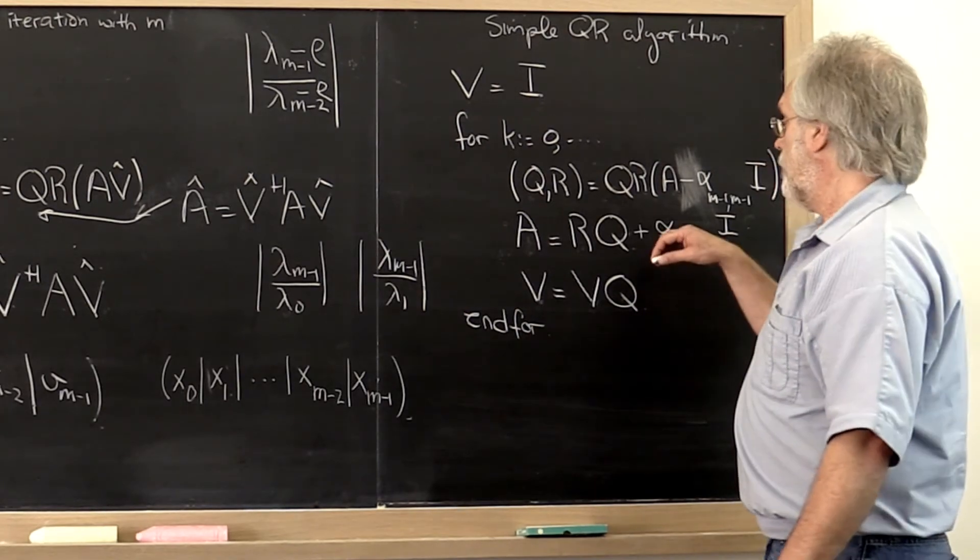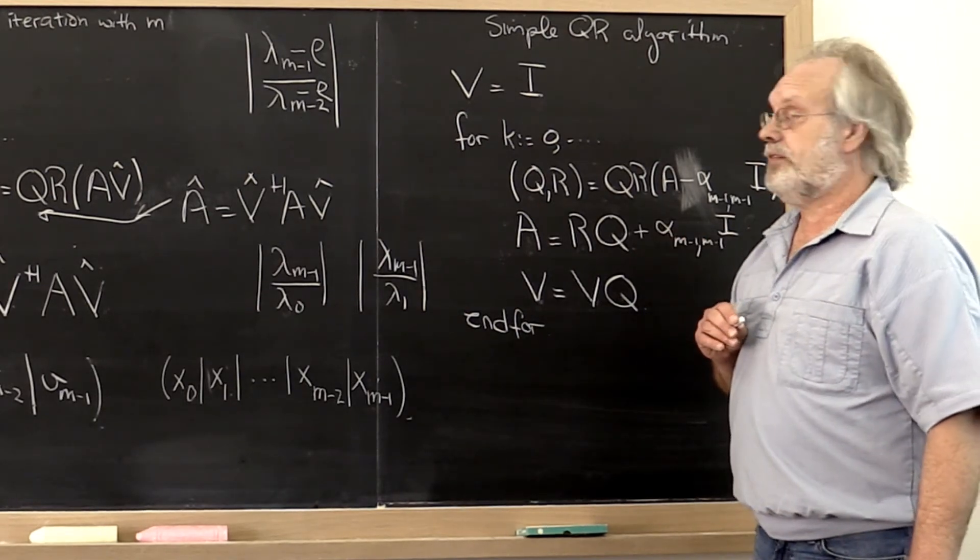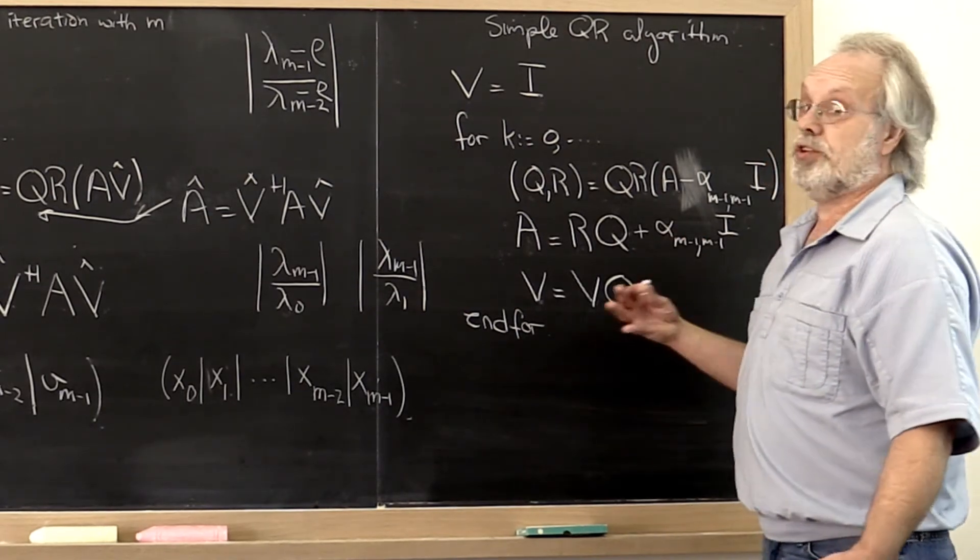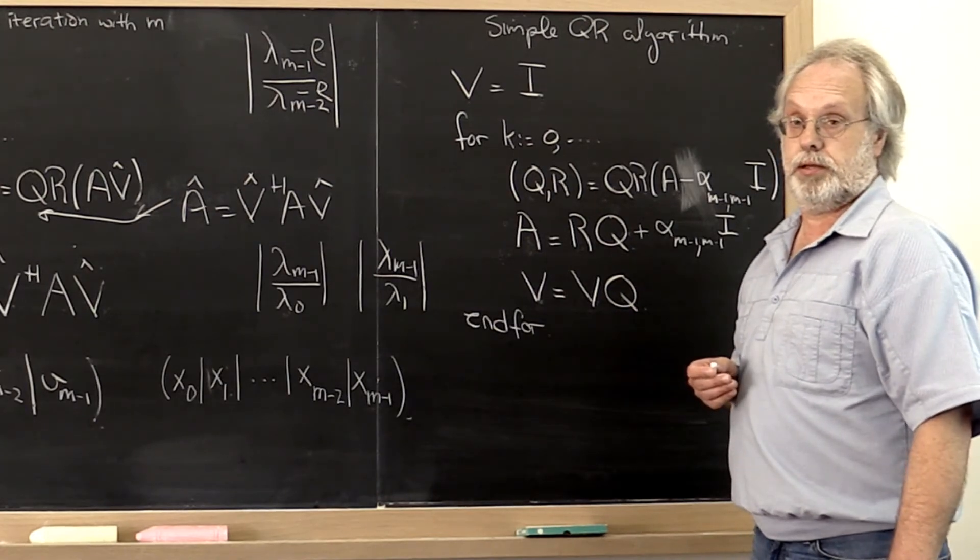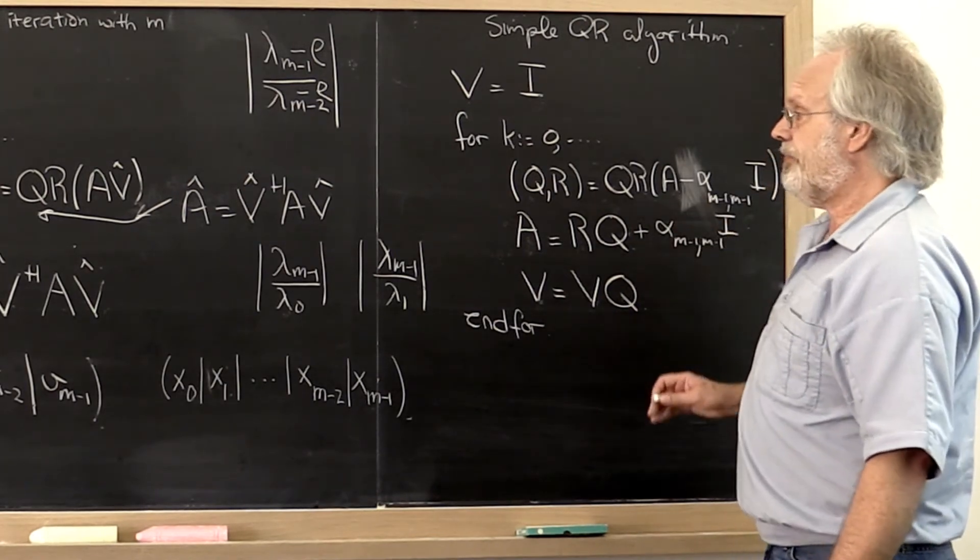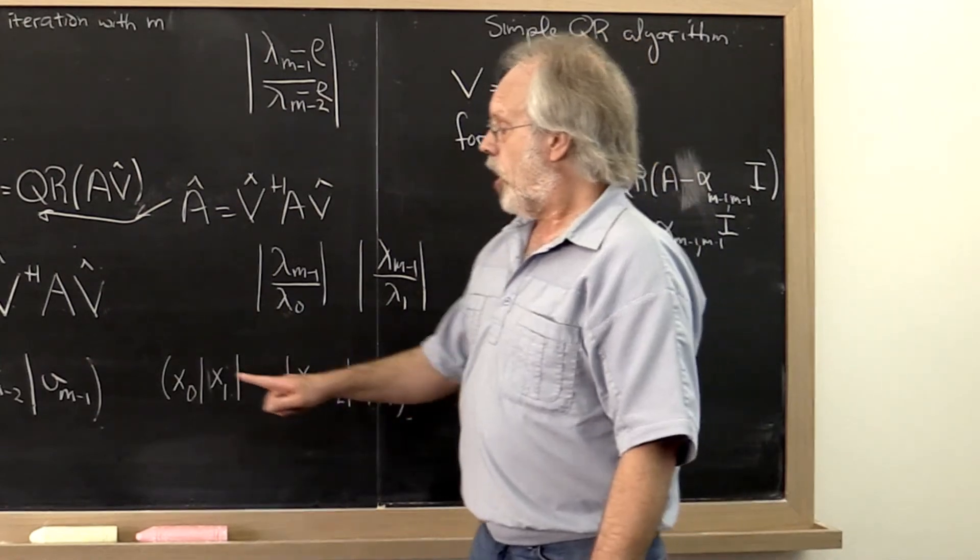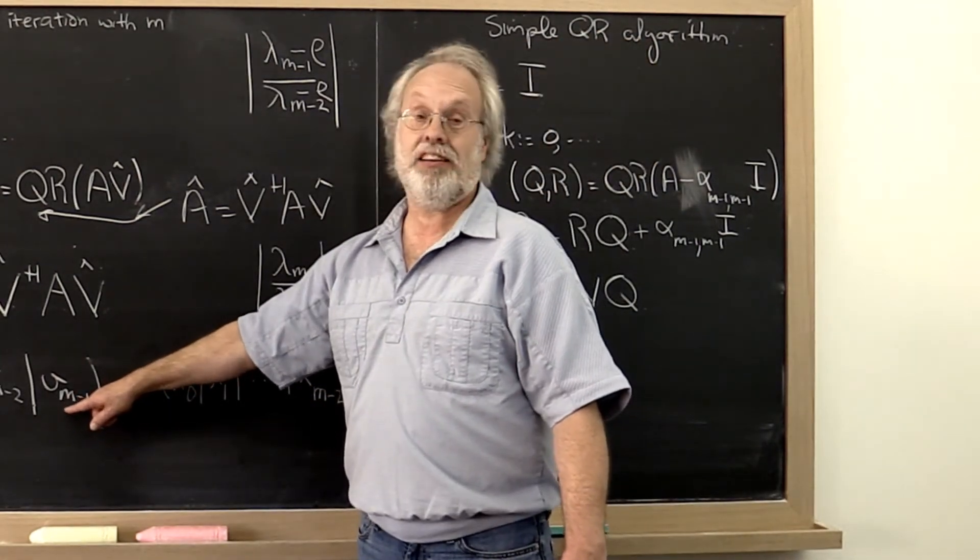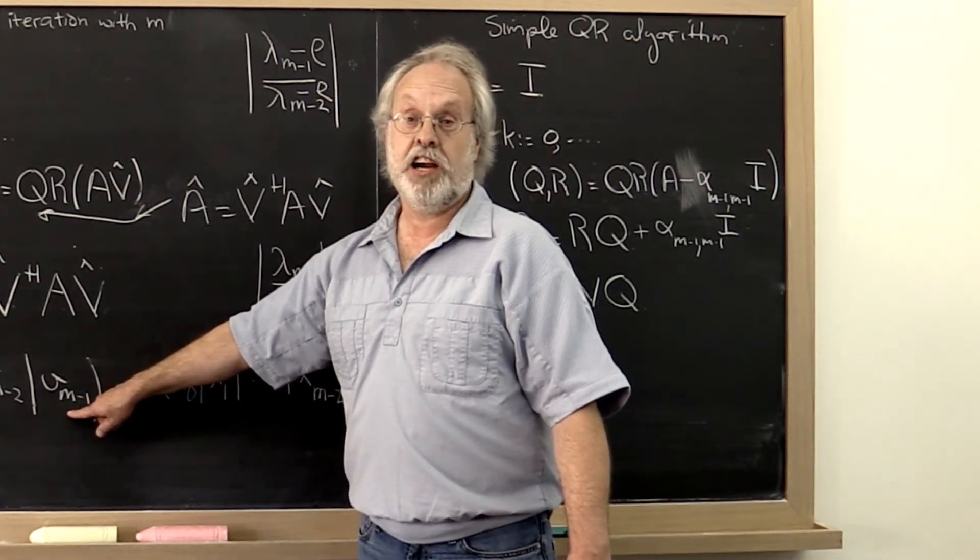Okay? And if we do that, then we have something that's known as the shifted QR algorithm. It has the benefit that we end up homing in on that last eigenvector very, very quickly.